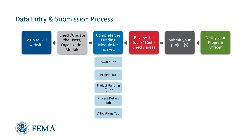The VISR entry and submission process includes the following steps: data entry and submission, log into the GRT website, check and update the users organization module, complete the following modules for each year — award tab, project tab, project funding tab, project details tab, and allocations tab. Then review the four self-check areas, submit your projects, and notify your program officer.